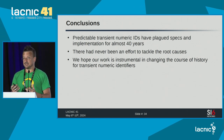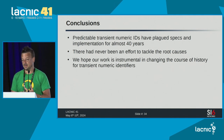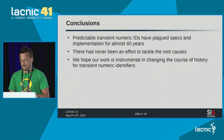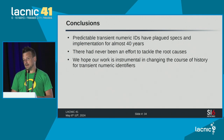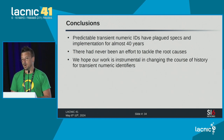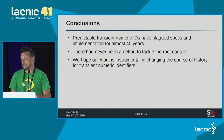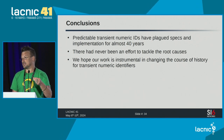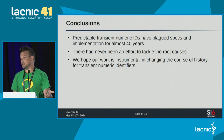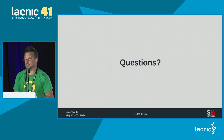The conclusions: predictable transient numeric IDs have plagued both specifications and implementations for over 40 years. This work was our effort to tackle the root causes so we wouldn't have to continue patching protocols for another 40 years. The idea was not just to publish a document, but to introduce requirements so that future specifications would have to do things right in this regard.